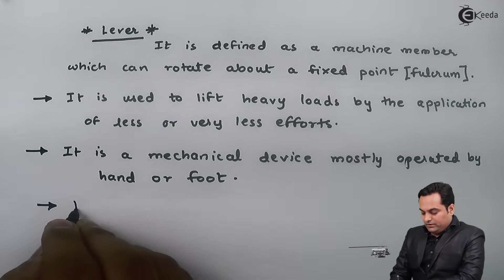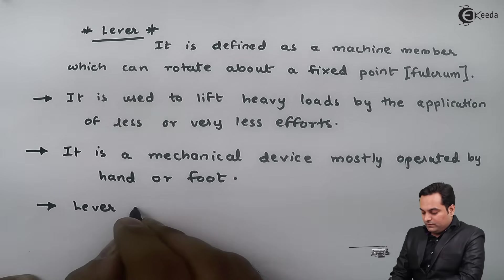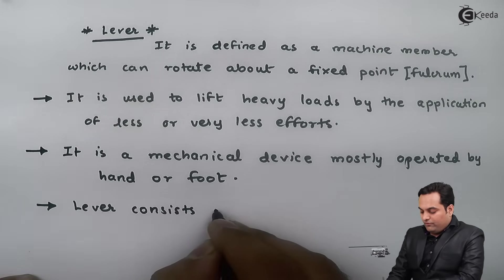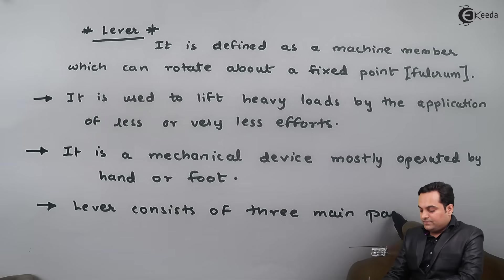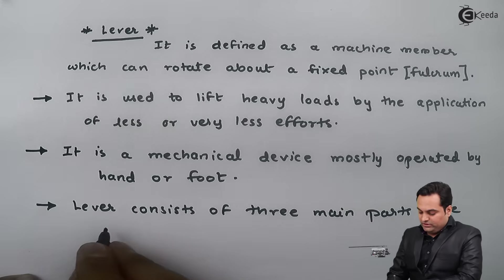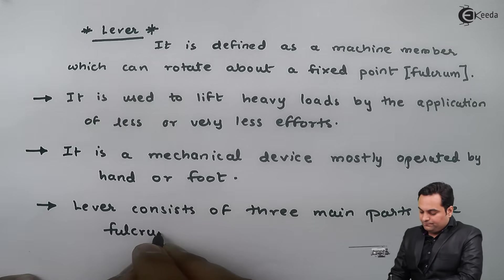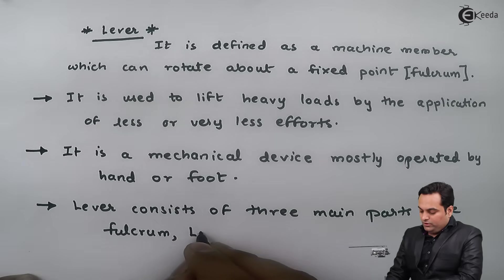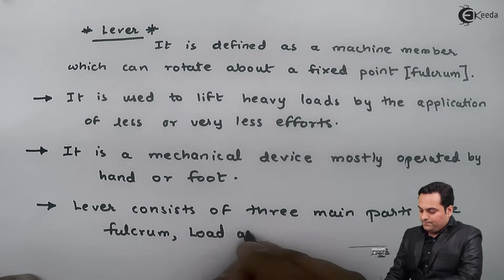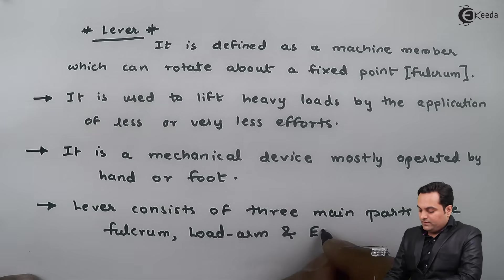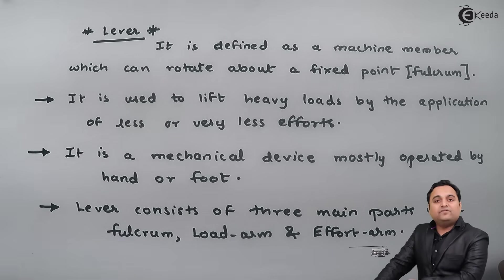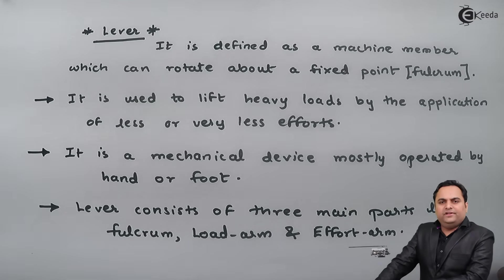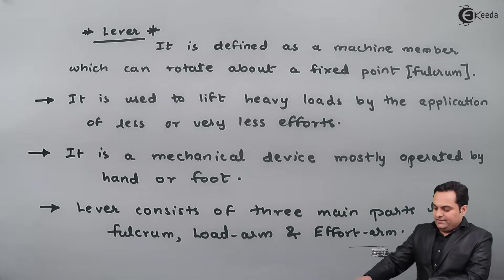A lever consists of three main parts: the most important part is called the fulcrum, then the load arm, and the effort arm.